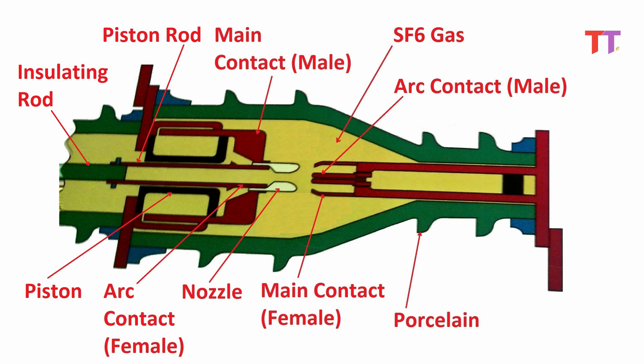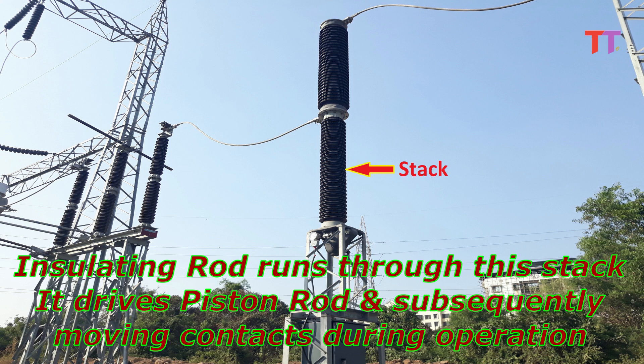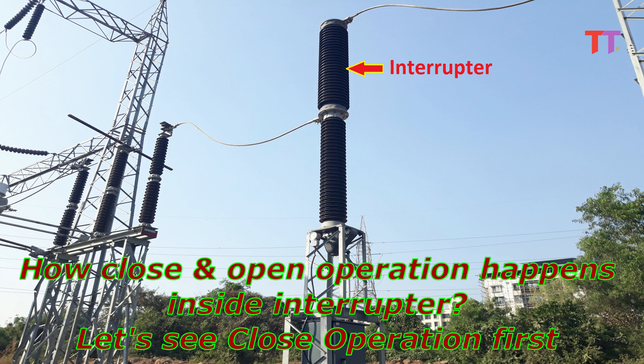Piston rod is coupled with insulating rod. This is how insulating rod looks like. Which runs through this stack and drives piston rod and subsequently moving contacts during operation. So let's see how close and open operation happens inside interrupter.